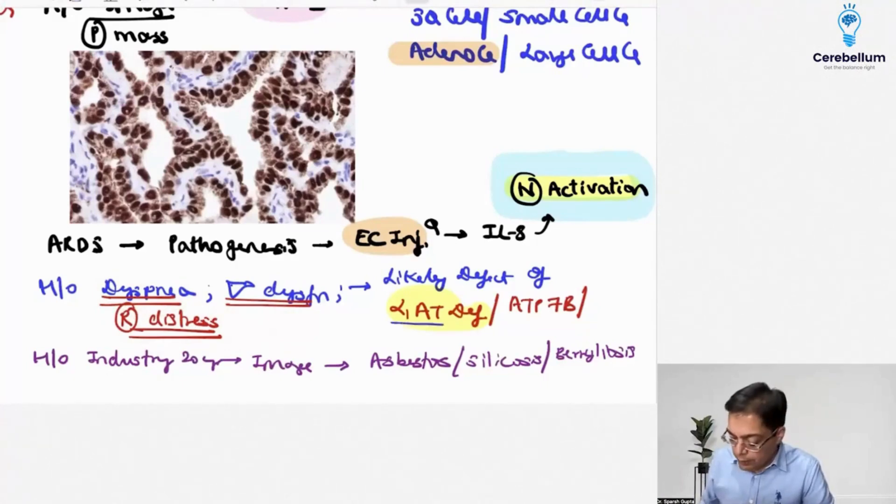Options were with respect to ATP7B, which was associated with Wilson's, ATP7A which was Menkes, and one option was alpha-1 antitrypsin deficiency. Alpha-1 antitrypsin deficiency.